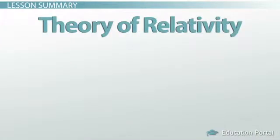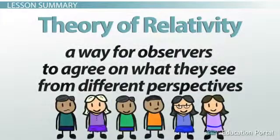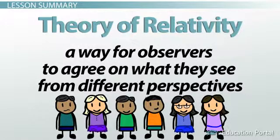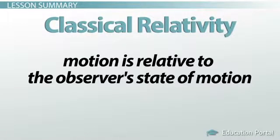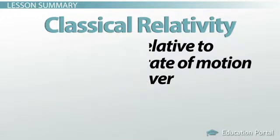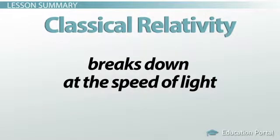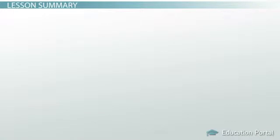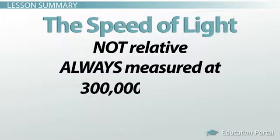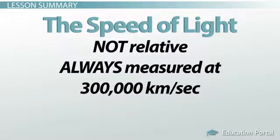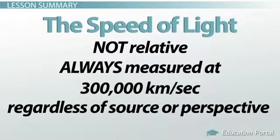In summary, the theory of relativity provides a way for observers to agree on what they see from different perspectives. Classical relativity tells us that motion is relative to the observer's state of motion. However, classical relativity breaks down at the speed of light. The speed of light is not relative, but rather is always measured at 300,000 kilometers per second, and that's regardless of the source of the light or the perspective of the observer.